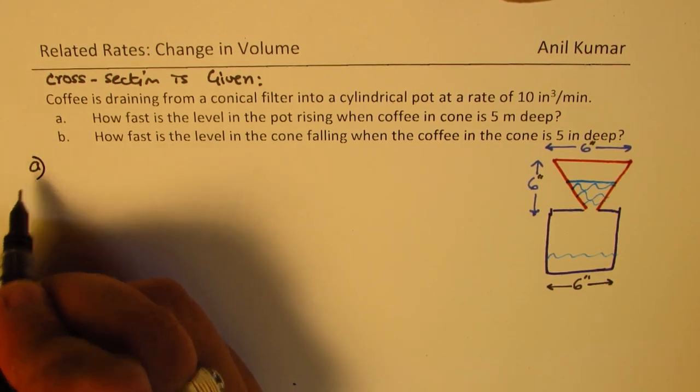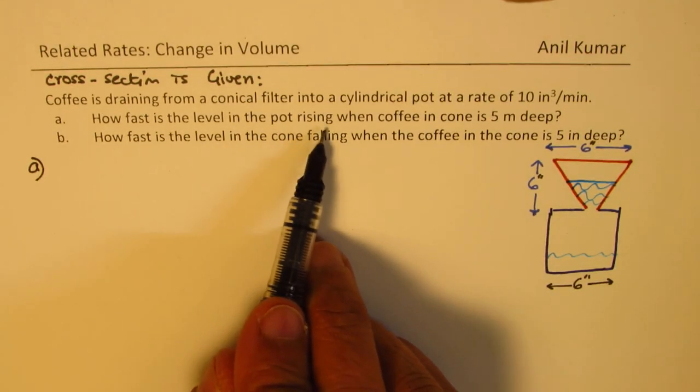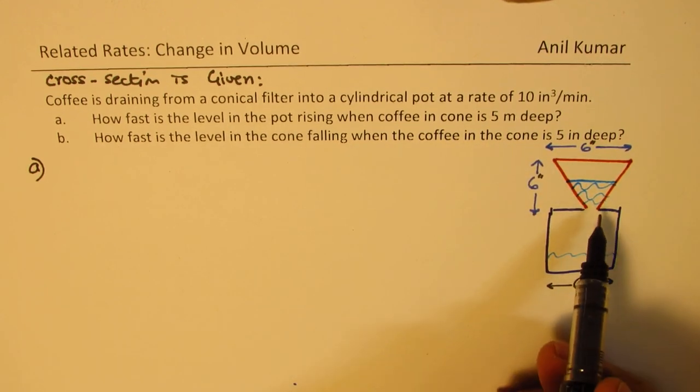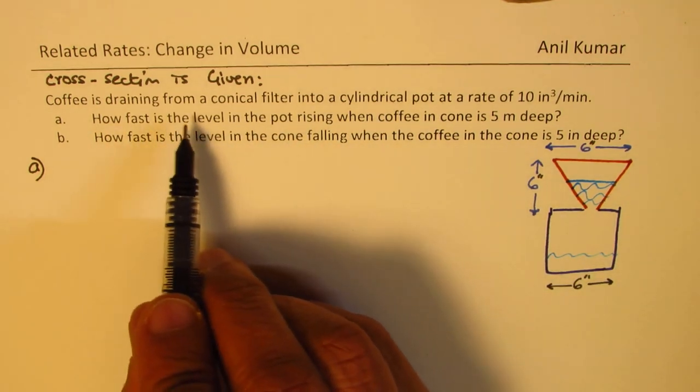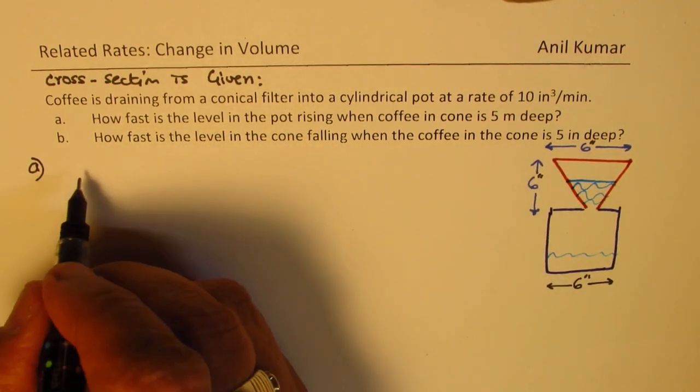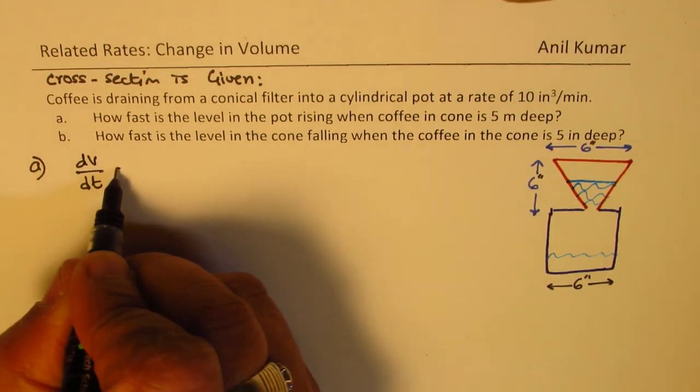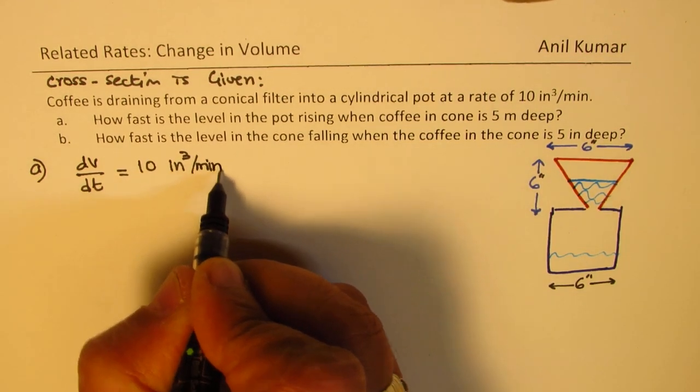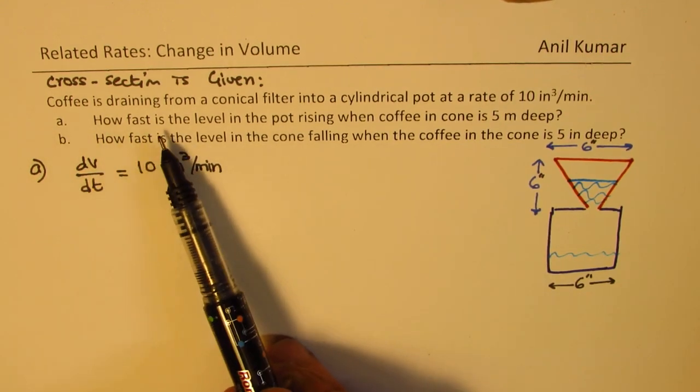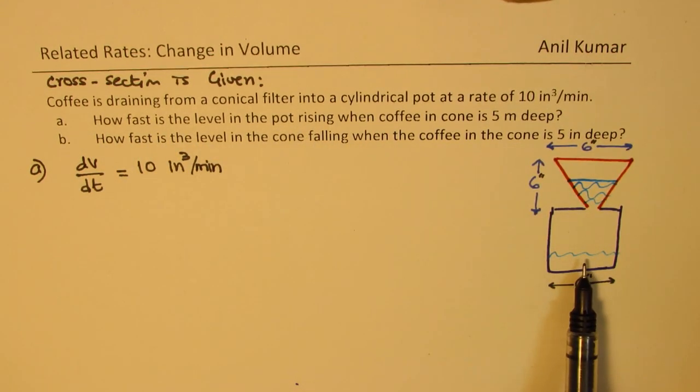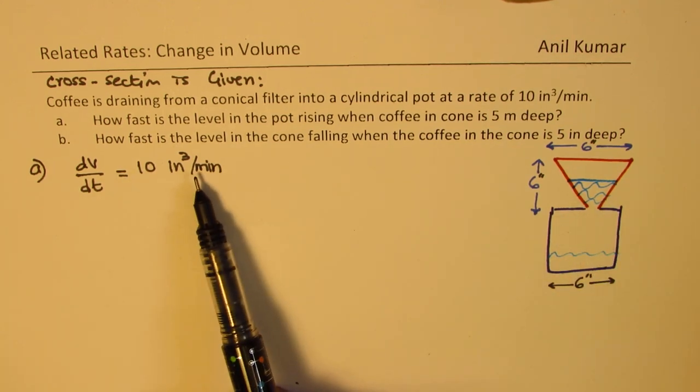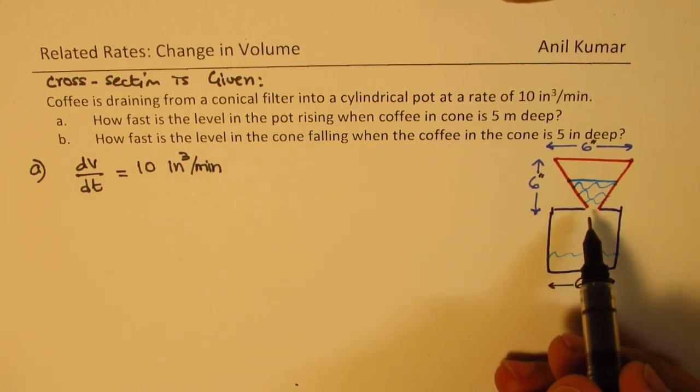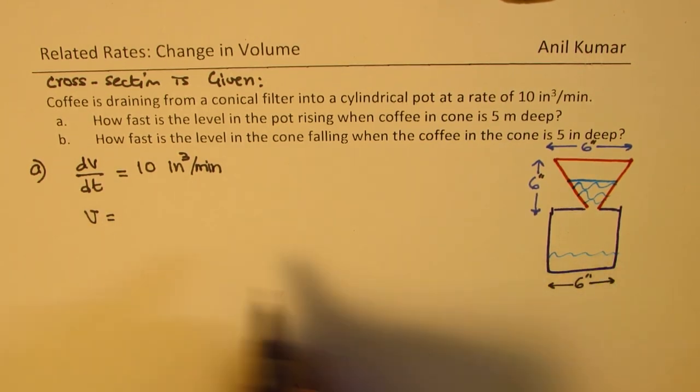So let's do part A, which says how fast is the level in the pot rising when coffee in the cone is 5 inches deep? Now we are given that the drainage from this cone is a change in volume. So change in volume is basically 10 inches cubed per minute. This is positive since we are filling in at this rate.